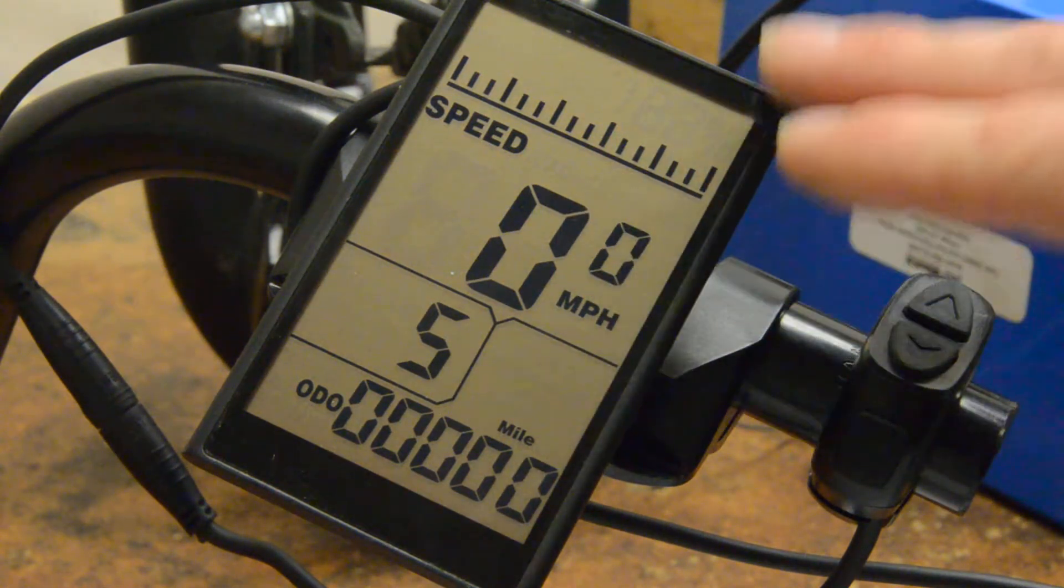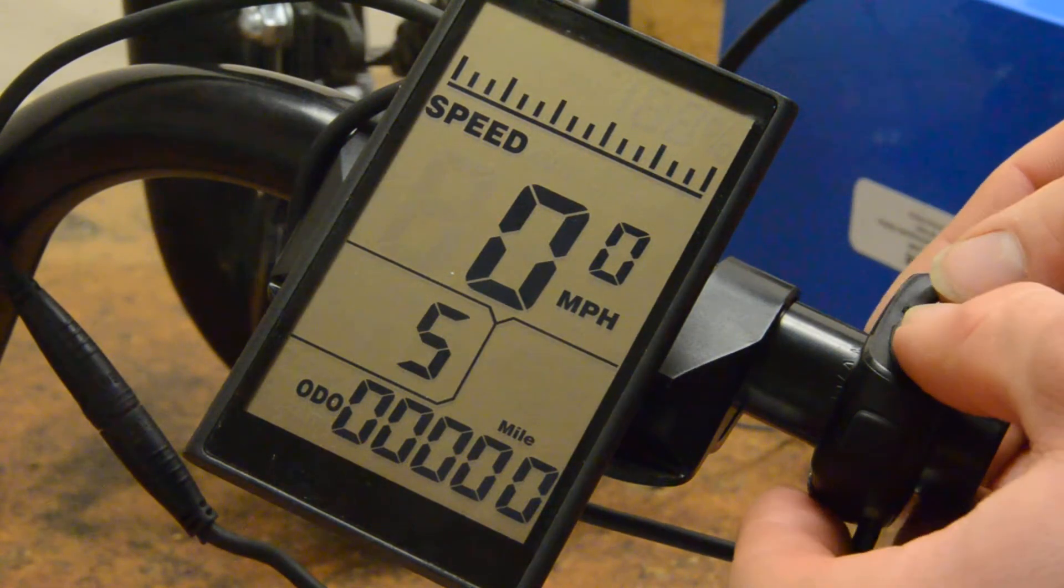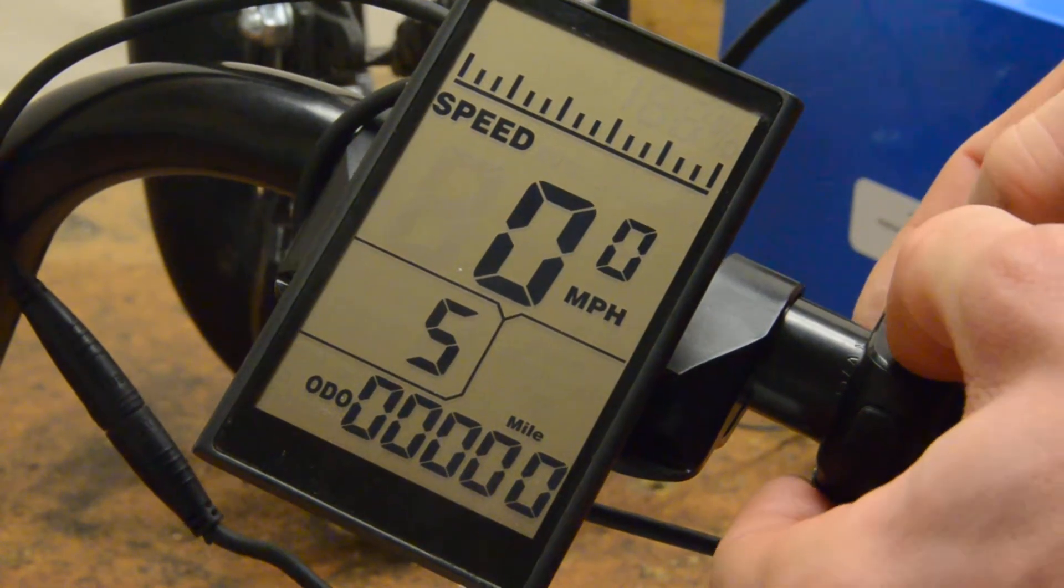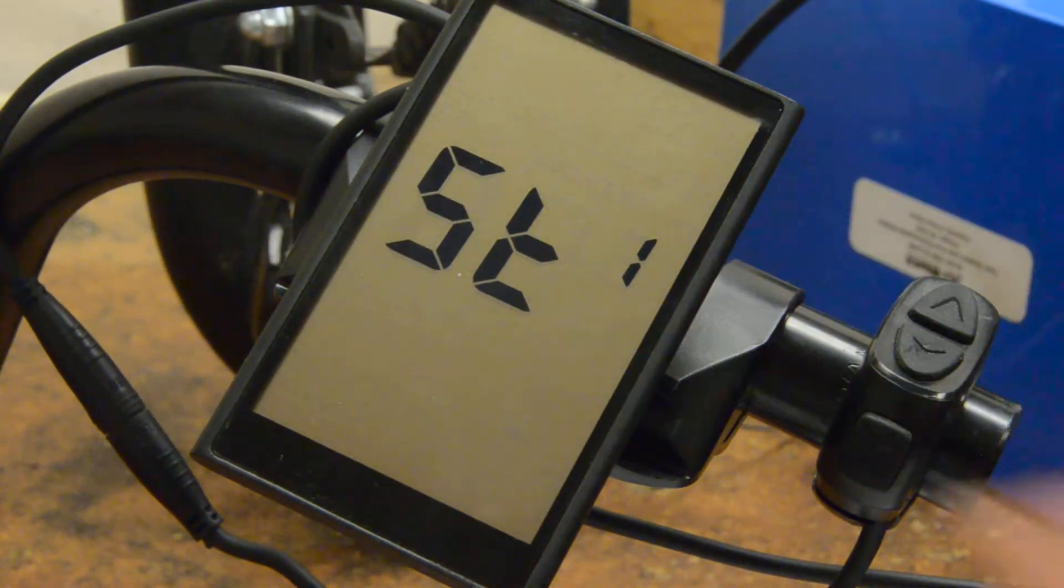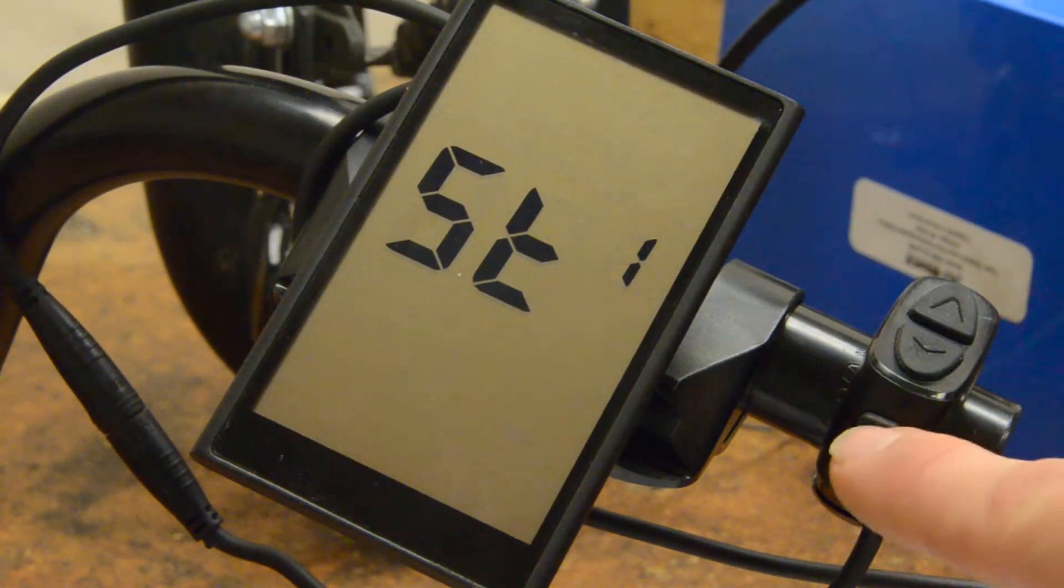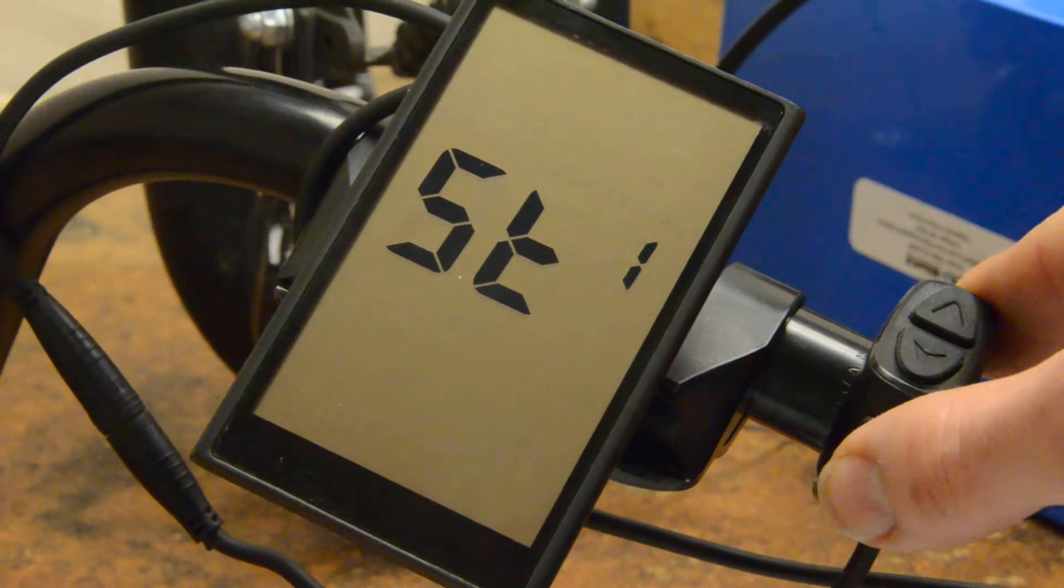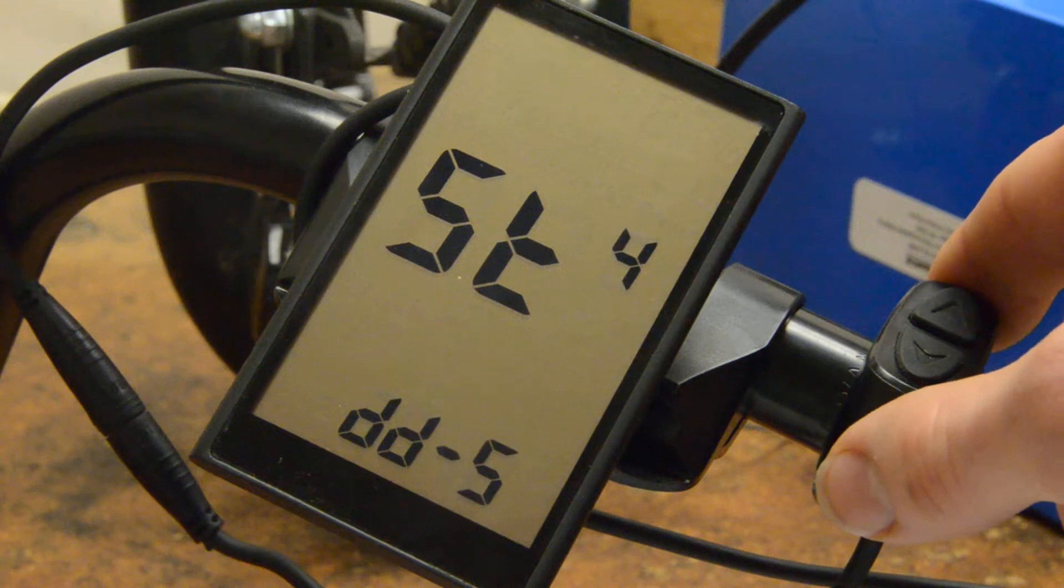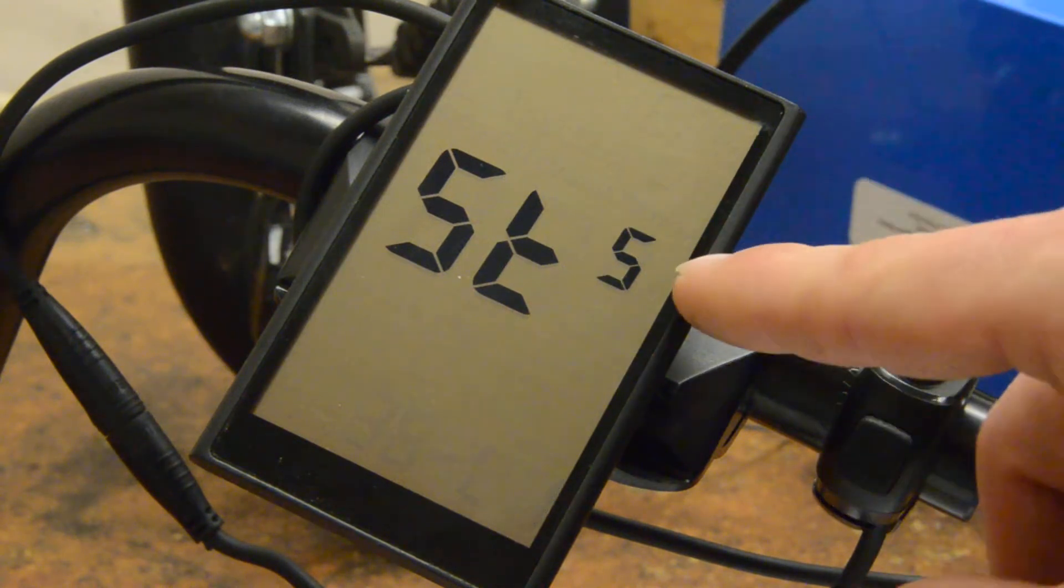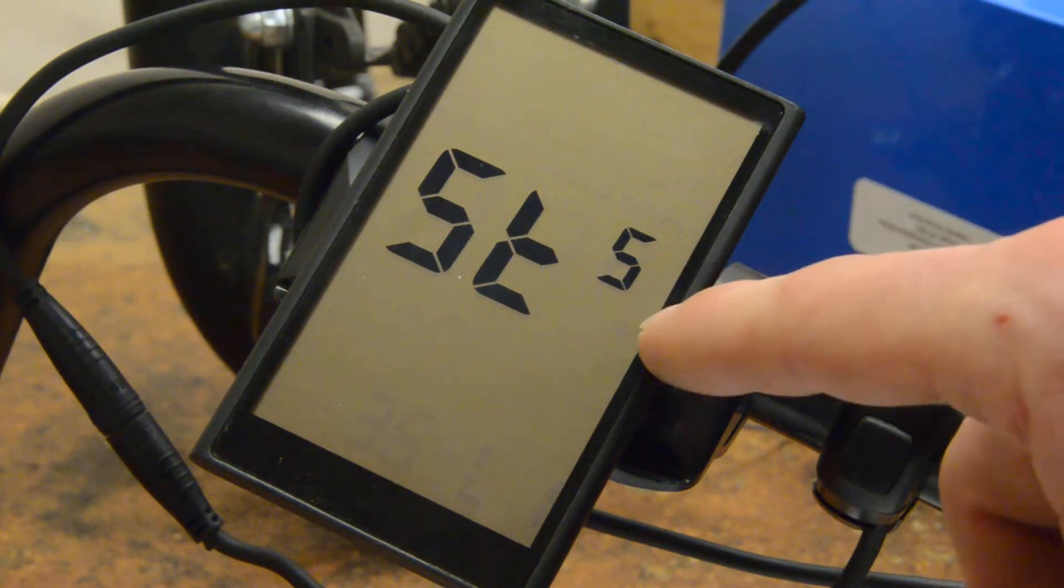So we're going to start off with the screen turned on here. We're going to press and hold the up and down arrows at the same time for three seconds to open the settings menu and you see we're on ST1. To advance to the next setting we'll tap the M button once, we'll see ST2. So we're going to go through to ST5. This is where you set your voltage settings.